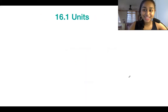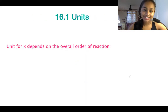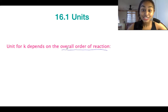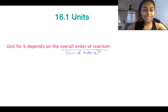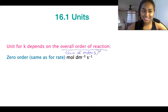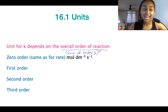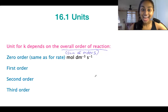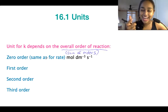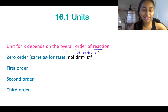Now let's talk about the units of K. The unit of K depends on the overall order of reaction — remember, the overall order is the sum of all our different individual orders. There are four different ones you need to be aware of: zero, first, second, and third order. The unit for K changes for each. I've got a way of working it out that makes it easier so that you don't have to memorize all of it.